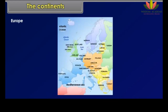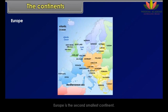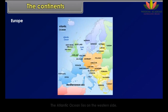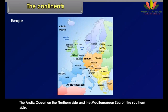Europe is the second smallest continent. Water bodies bind it on three sides: the Atlantic Ocean on the western side, the Arctic Ocean on the northern side, and the Mediterranean Sea on the southern side.